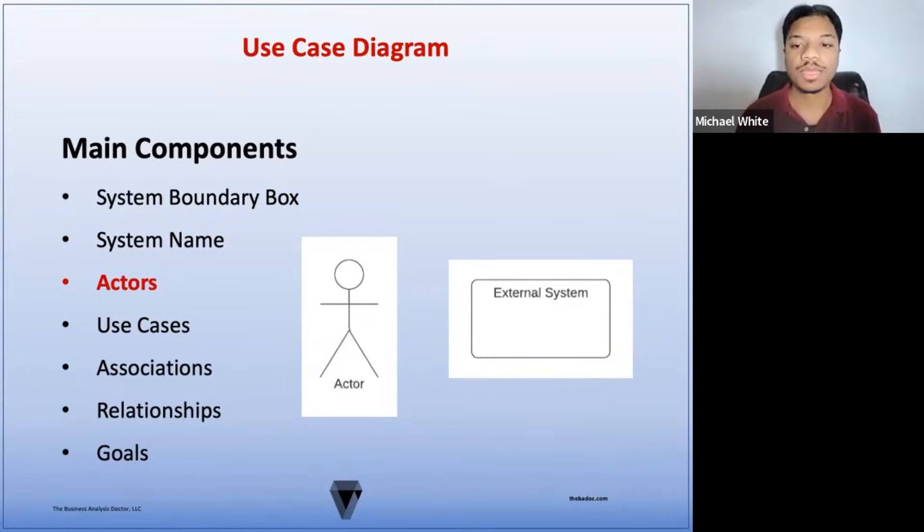Now we have our actors. An actor is any person or system that uses or interacts with the use case in order to achieve a goal. Each actor is given a role to represent their interaction with the solution. The name of human actors should always be in the form of a role and should not specify an actual name. Also, actors must interact with at least one use case. Actors can be in the form of a human or an external system. When they are in the form of a human, they are represented with this little stick figure here. But when actors are external systems, they're represented with smaller boxes.